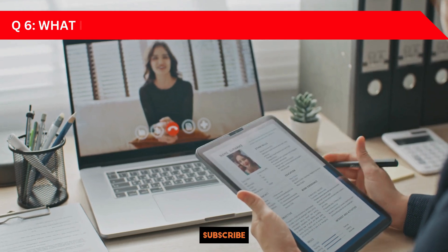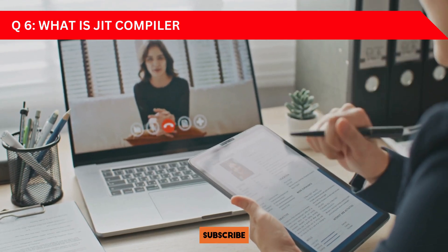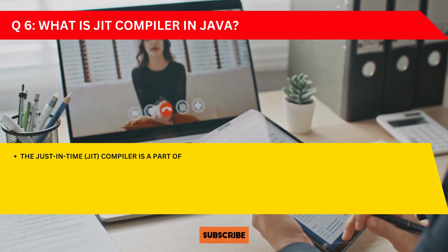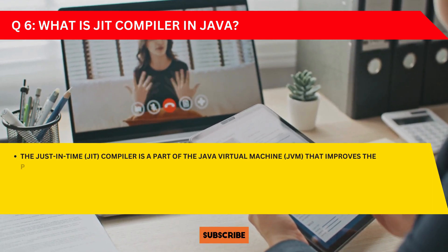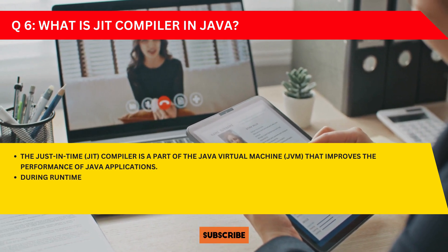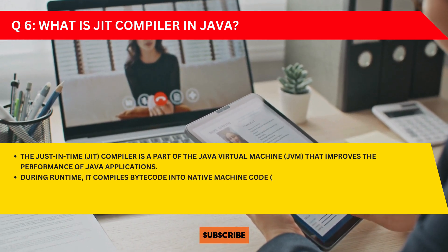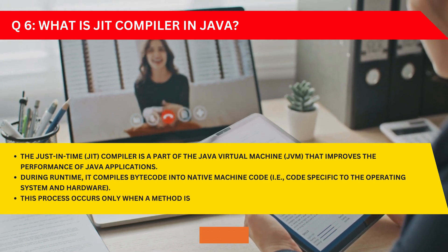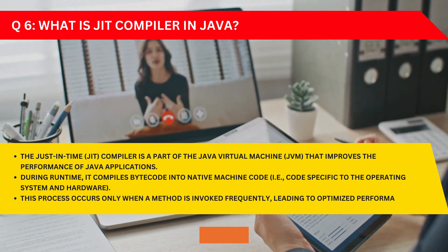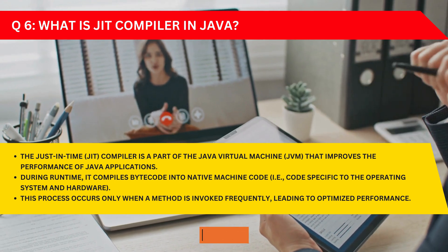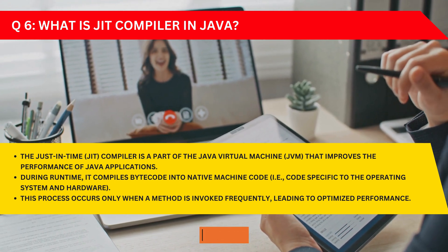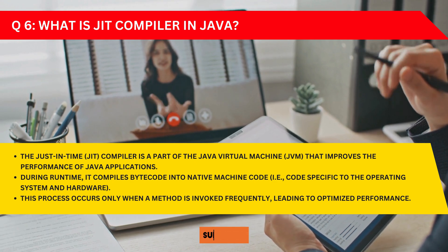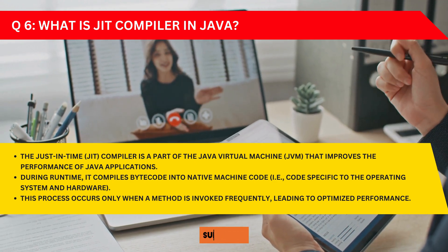Question six: What is the JIT compiler in Java? JIT stands for Just-In-Time compiler. It is part of the Java Virtual Machine (JVM) that improves the performance of Java applications. During runtime, it compiles bytecode into native machine code specific to the operating system or hardware. This process occurs when a method is invoked frequently, leading to optimized performance.